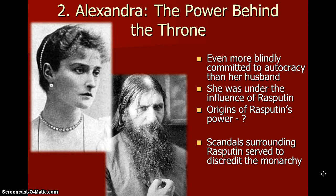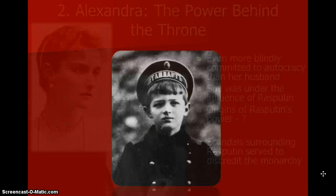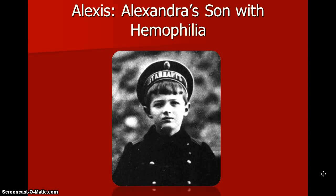Basically, Rasputin was a psycho — he literally was a psycho. He claimed a lot of weird stuff. And because the king's son was sick with hemophilia, and when this guy was there, the son got cured, they started trusting him, especially Alexandra.